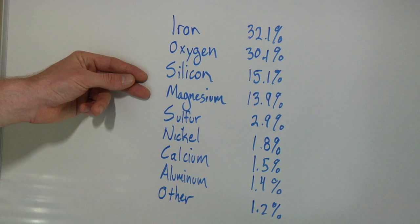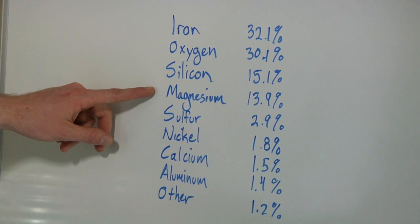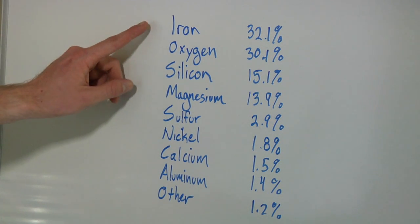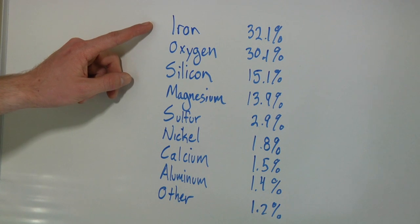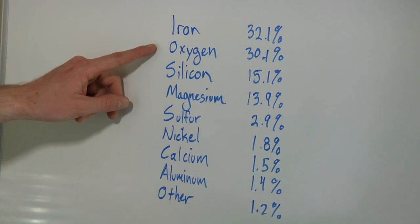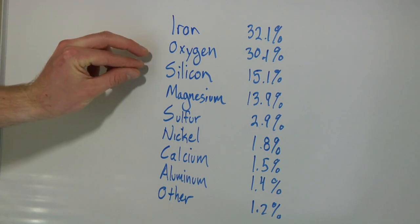It's worth noting that the majority of iron occurs in the core, and a lot of these other ones occur in the outer layers of the Earth.